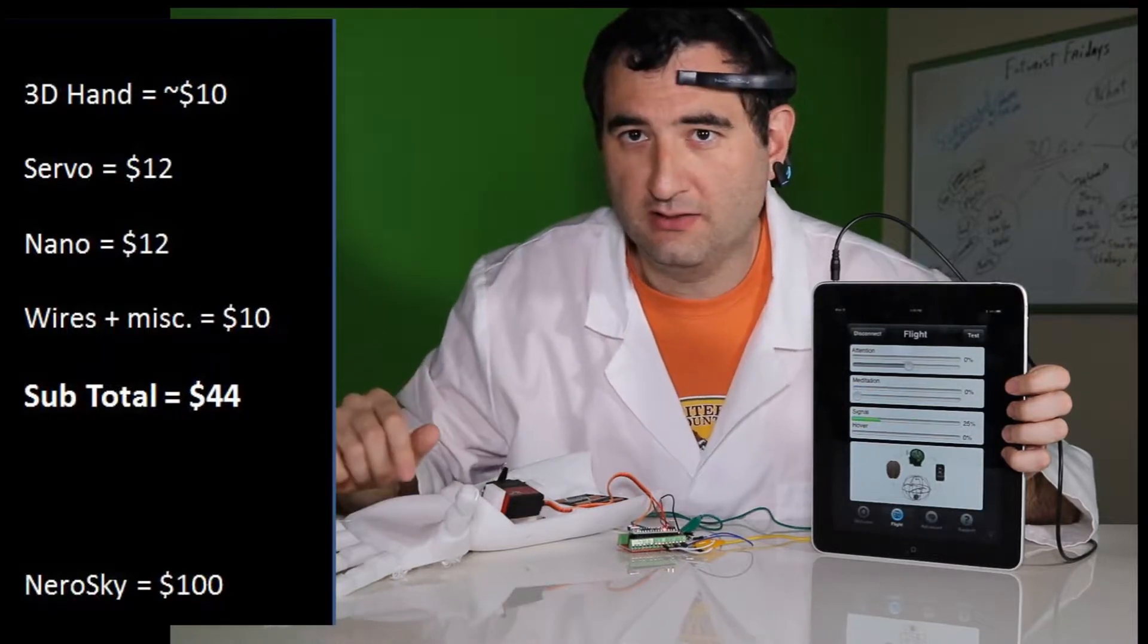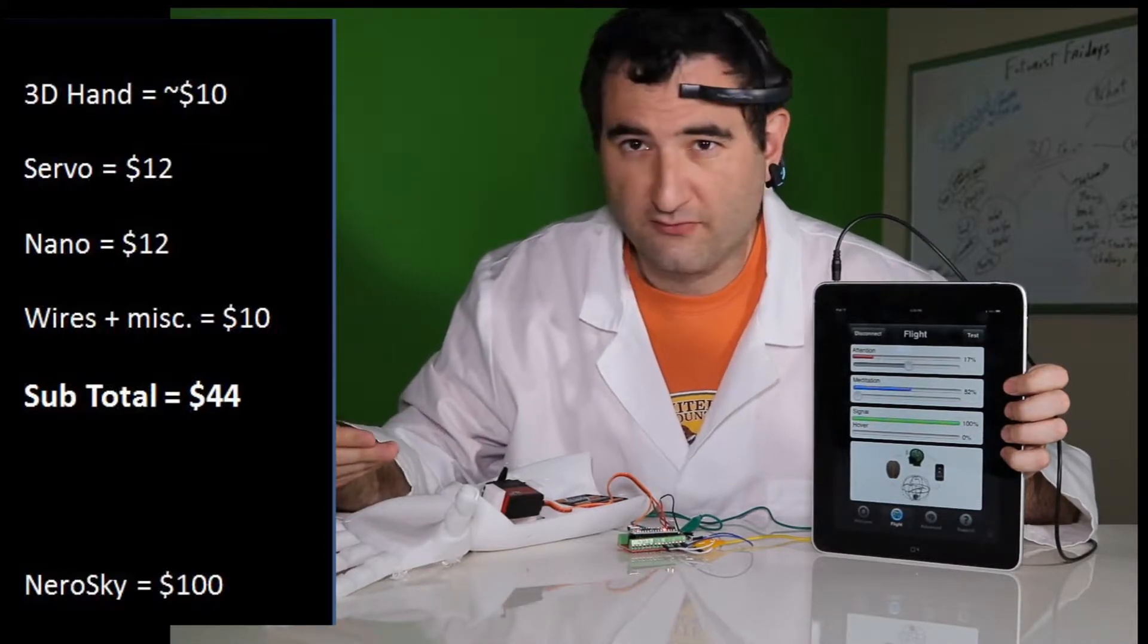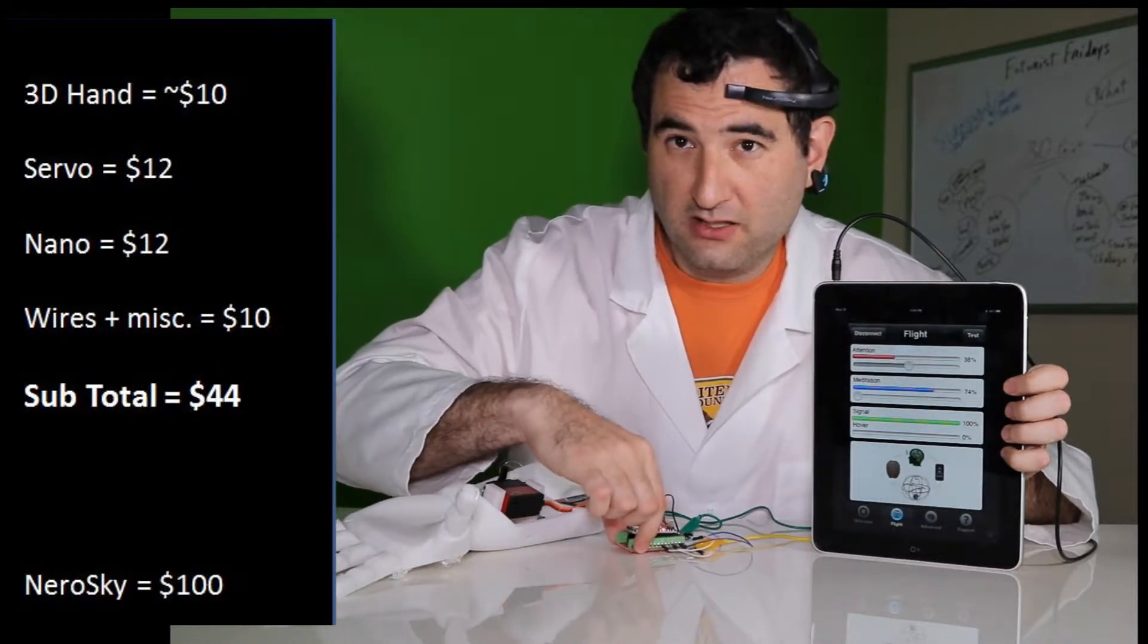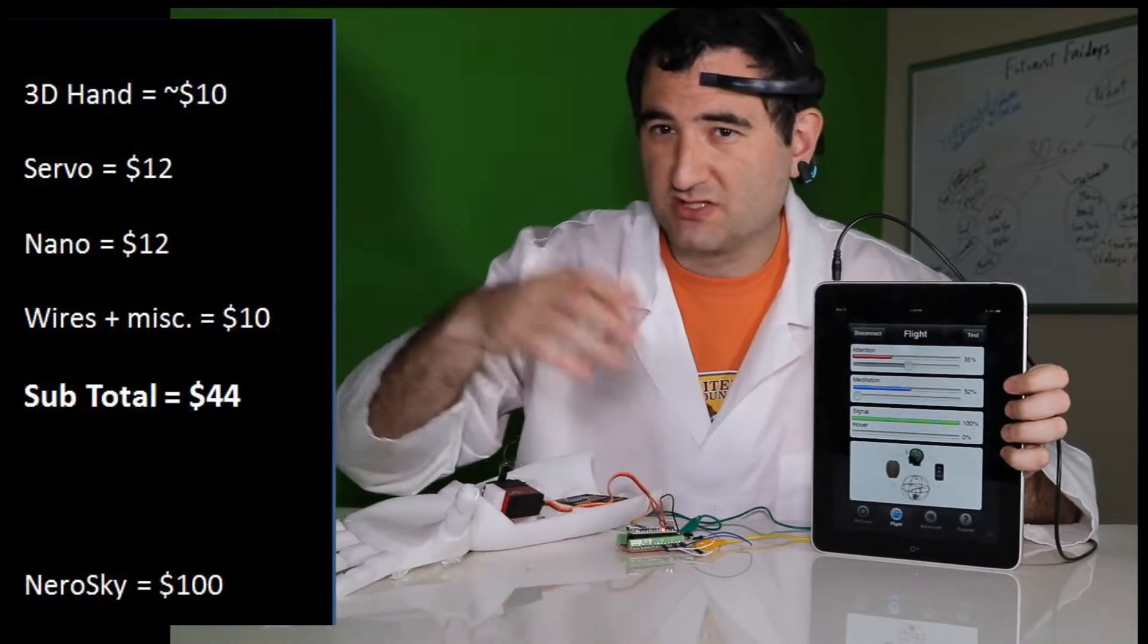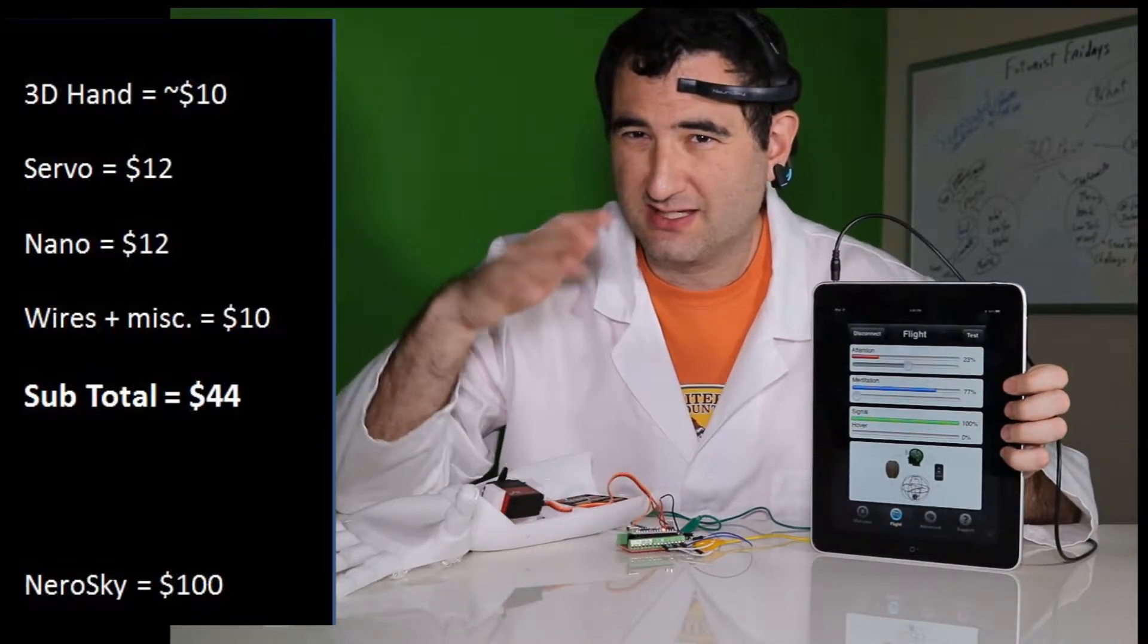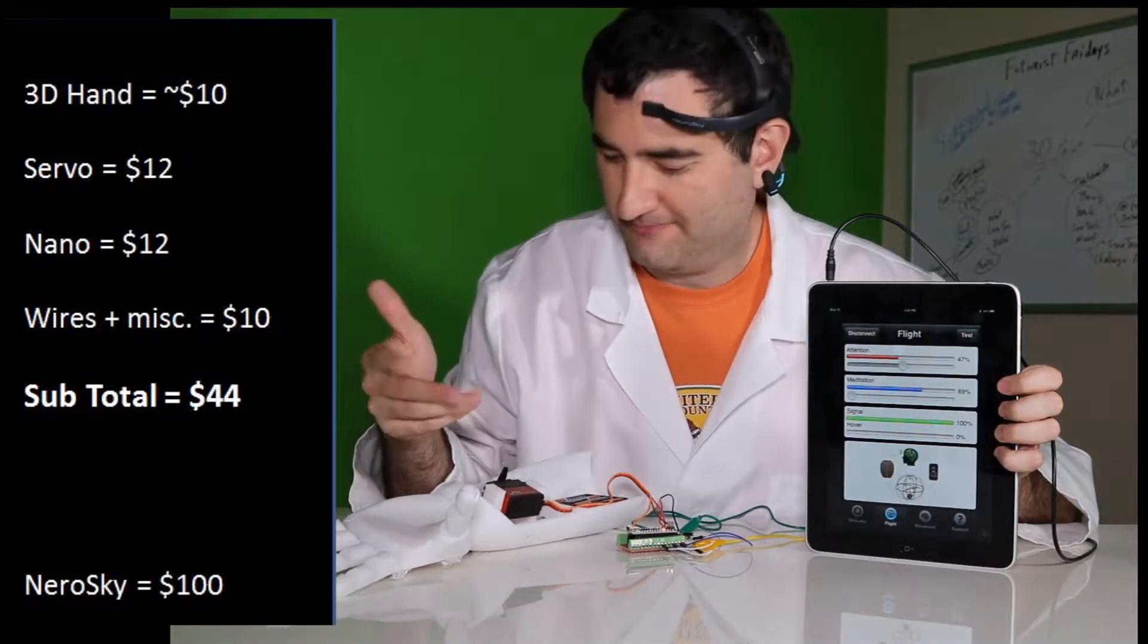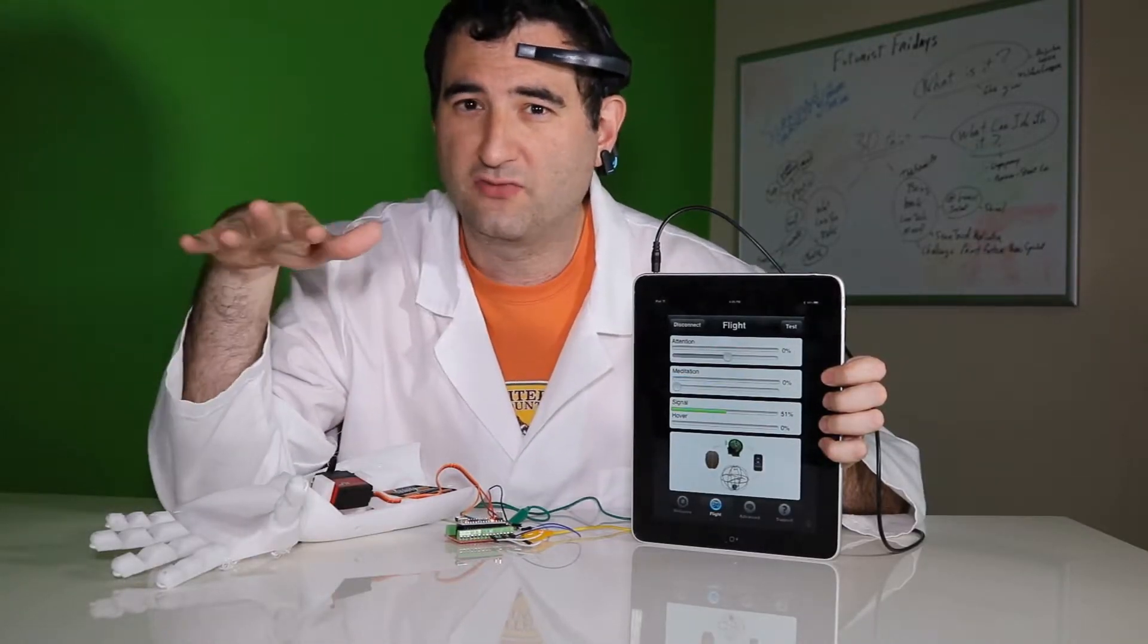This hand is 3D printed. I printed it using PLA plastic, probably a fourth of a spool. So it's around five, but we'll give it an estimate of $10. The servo itself was around 12. The nano and the shield that came with it, I used banggood.com, which is direct from China. And you can get this nano, I think it's around $7 to $12. The miscellaneous cords and screws is probably another maybe $4, $10.